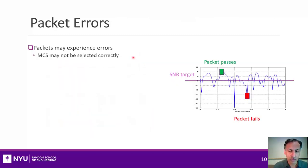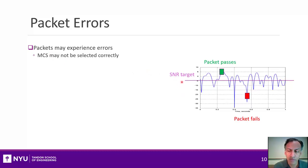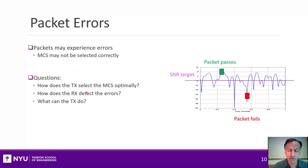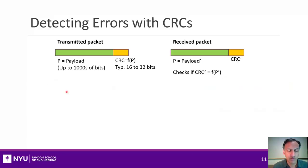Packets in real Wi-Fi systems can experience errors, mainly because the MCS may not be selected correctly. For example, there's some SNR target that represents the minimum required for the MCS. If the actual SNR is higher than that, it would pass; if it's lower, there's a chance it might fail. That raises some basic questions: how does the transmitter select the MCS optimally? What can the receiver do to detect errors when they occur? And what can the transmitter do to overcome those errors?